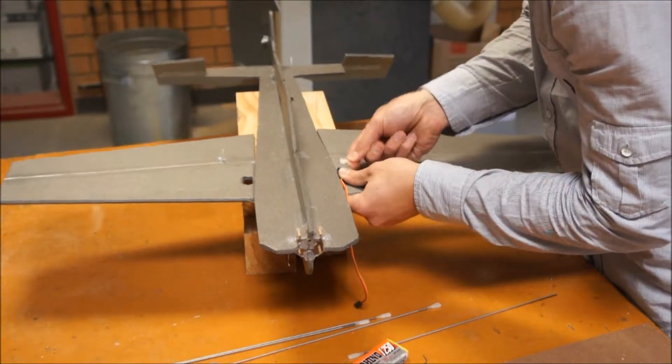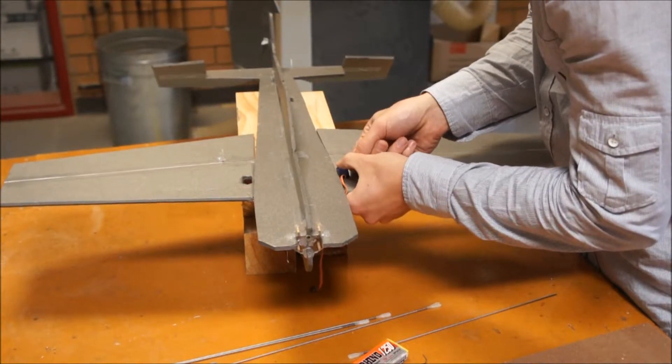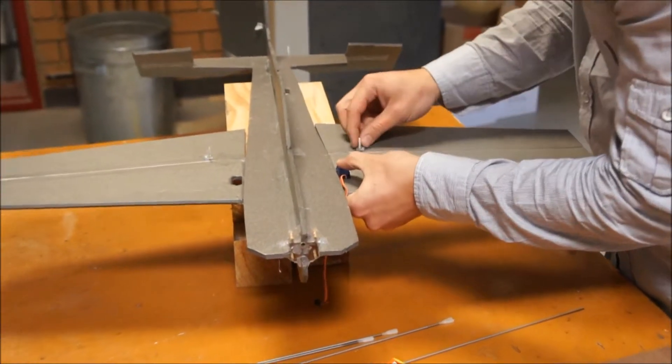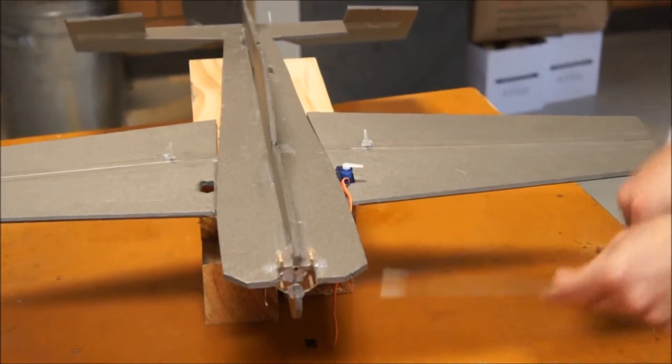So I'm going to put that sort of approximately perpendicular to the linkage between the control rod and the control arm.